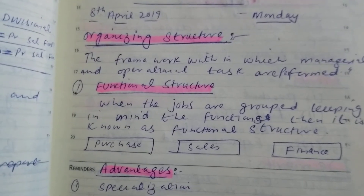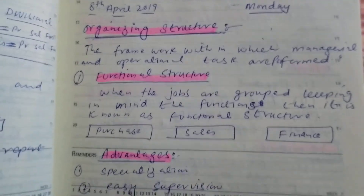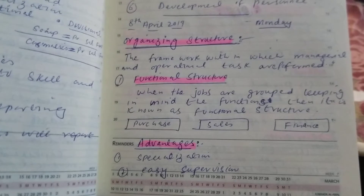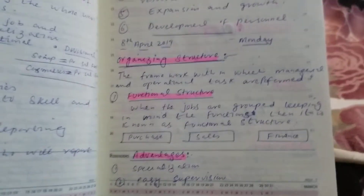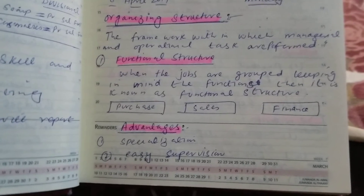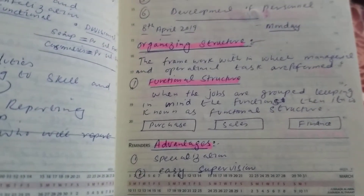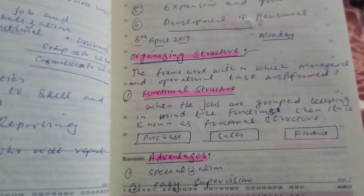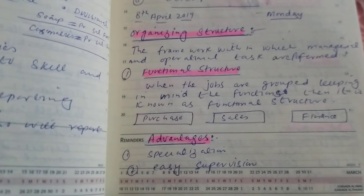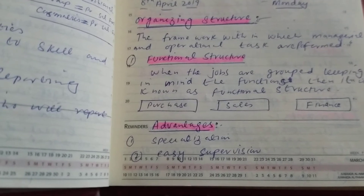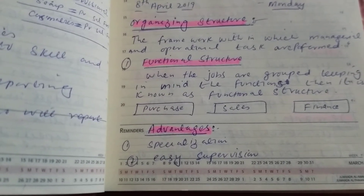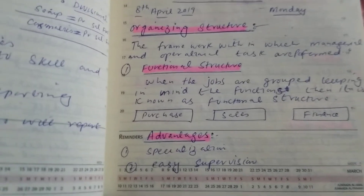Organizational structure is the framework within which managerial and operational tasks are performed. Functional structure is when jobs are grouped keeping in mind the core functions — such as purchase, sales, and finance — then it is known as functional structure.